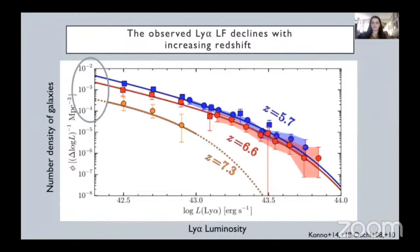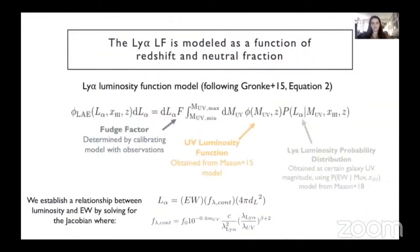To get more information from these observations, we can build a model that separates redshift and the neutral fraction. We can fix either parameter and see how the observations adjust to our model. Here we have our Lyman-alpha luminosity function model taken from Franke's 2015 paper. We can predict the number density of Lyman-alpha emitters by using the Lyman-alpha probability distribution — the probability for a galaxy to have a certain Lyman-alpha luminosity — combined with the UV luminosity function model as functions of UV magnitude, neutral fraction, and redshift. This integral is then multiplied by a normalization constant F, which we determined by calibrating our observations.